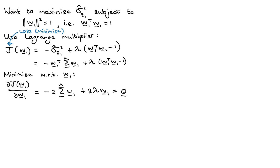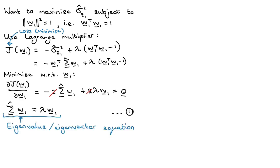Setting the gradient to zero and doing the algebra — eliminating the factors of 2 and rearranging — gives us: sigma W1 equals lambda W1. Does that look familiar? This is just the eigenvalue-eigenvector equation. So this means that W1 must be an eigenvector of the sample covariance matrix sigma, with lambda being the corresponding eigenvalue. In NumPy or MATLAB, there's just an eigenvalue function, so you can call that and get all eigenvalues and eigenvectors.